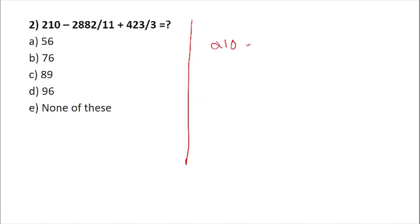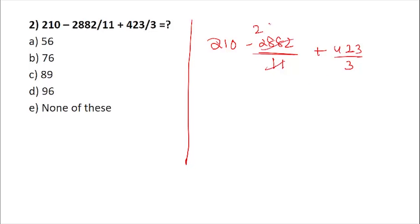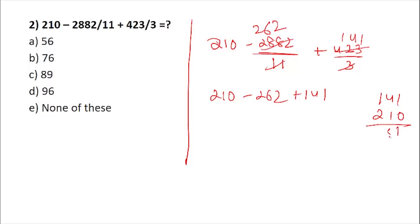The next problem: 2882423 divided by 3. In most exams, the denominator will divide the numerator. Looking at this number, you can see it is divisible by 11. Working through the division: 141, 210, 153, 351 — subtracting 262 we get 89. We do have 89 as an option, so the answer is 89.